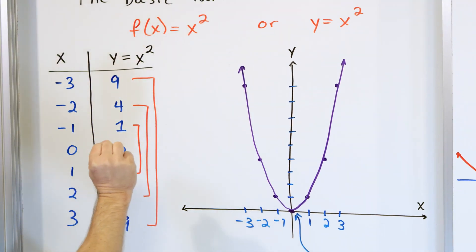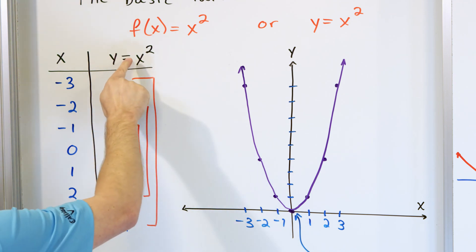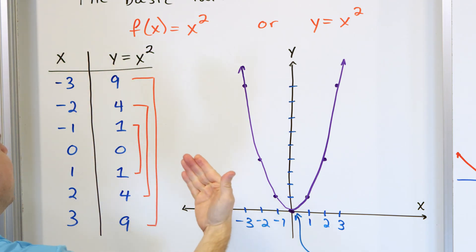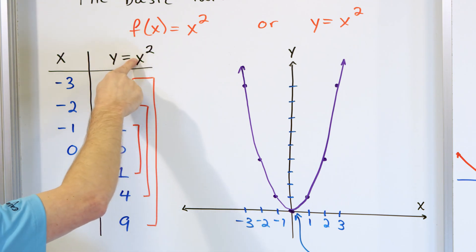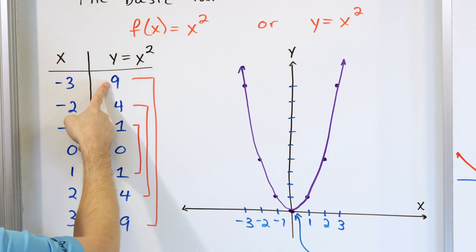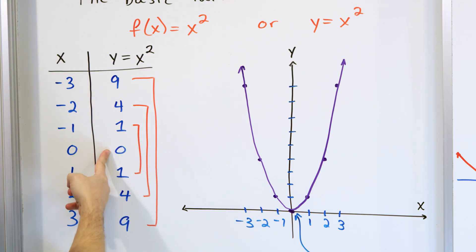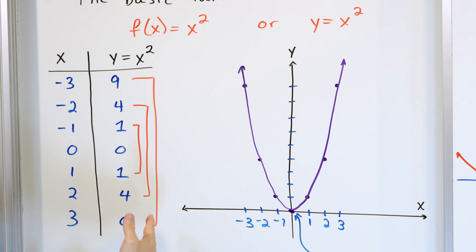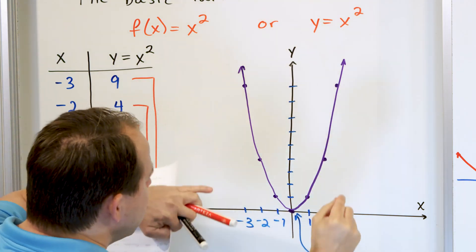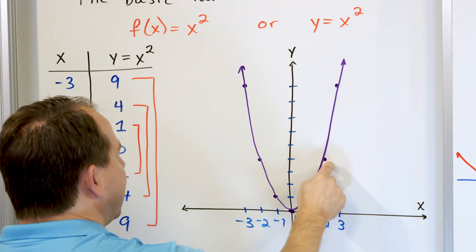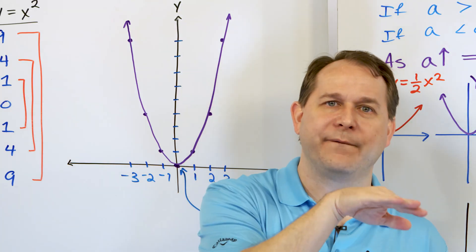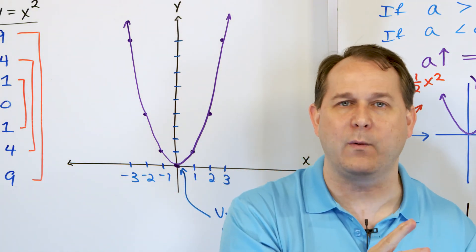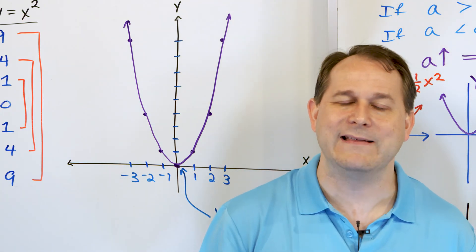Why does the parabola open down when the coefficient is negative? Everything comes back to the basic parabola. If instead of y equals x squared you make it y equals negative x squared, then for every value that comes out of x squared — say nine, four, one — you multiply by negative one. So the output would be negative nine, negative four, negative one, zero, then negative one, negative four, negative nine. You take all the positive values from the upward parabola and stick a negative sign on them, mapping all those points below the x-axis. That is why the parabola opens downward when the coefficient in front is negative.